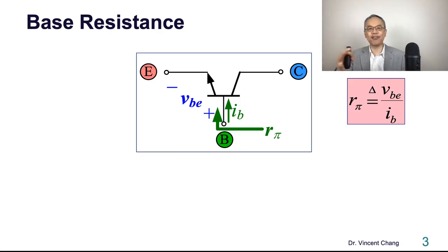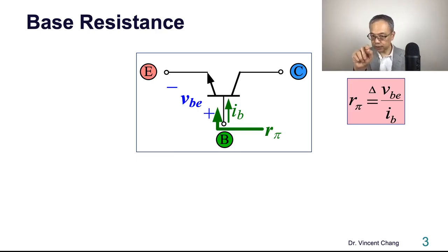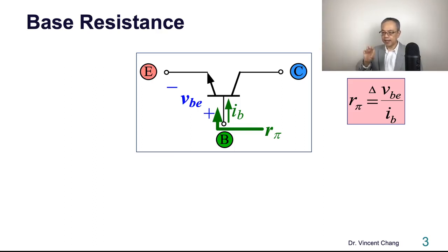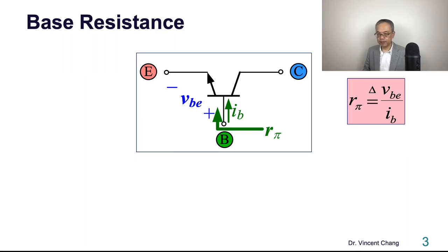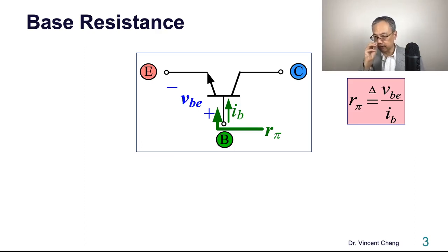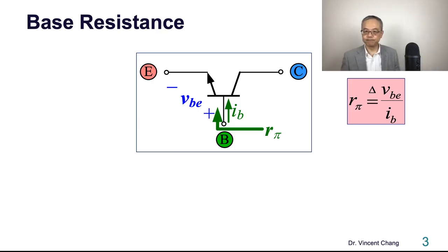The numerator is VBE, so VBE divided by IB equals R-pi. Let's turn that mathematical expression into the definition of R-pi: the resistance between base and the emitter — the numerator is VBE — yet looking into the base, meaning the current you are referring to is the base current.